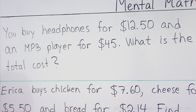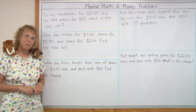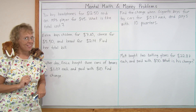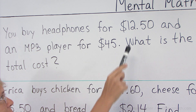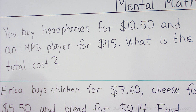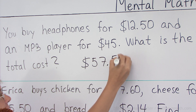Our first problem: you buy headphones for $12.50 and an MP3 player for $45. What is the total cost? Now this is not a difficult problem, but I want you to try to use mental math. We notice that there's just a dollar amount here, no cents, and this one has dollars and cents. So we add dollars and dollars — we add the 12 and 45 — and then there's going to be the 50 cents. So 45 and 12 should be 57, and then you have the 50 cents.